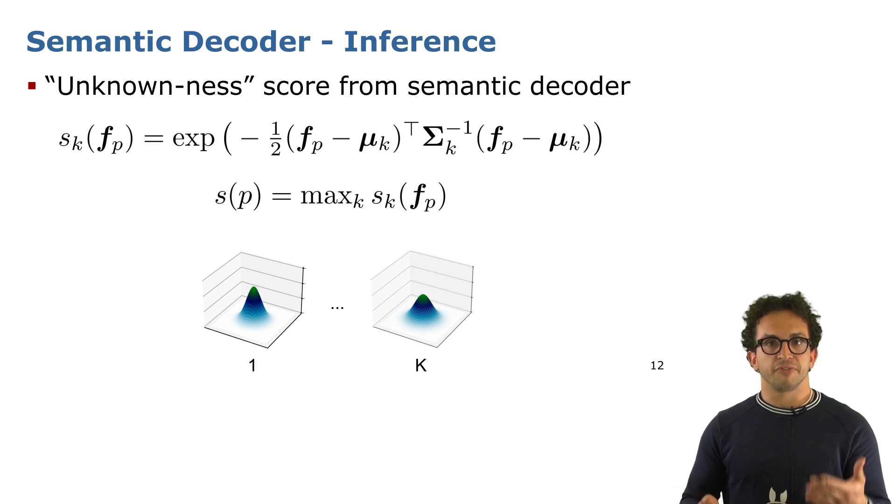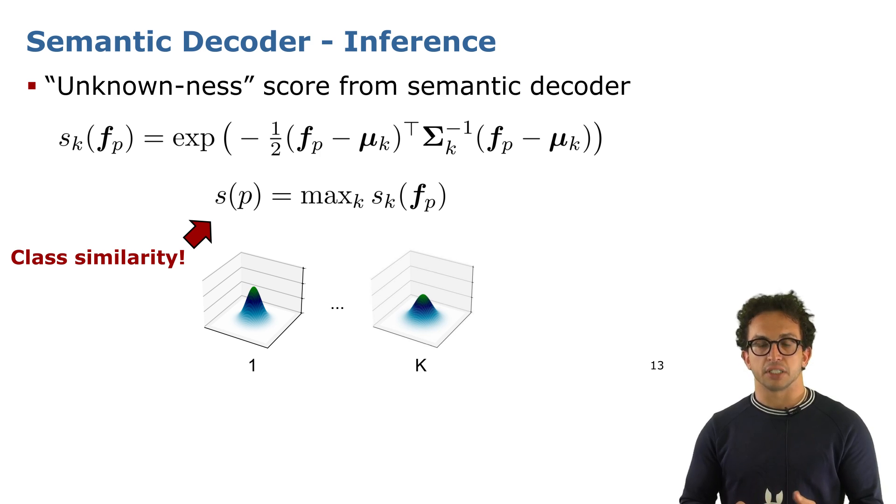This best fitting score is a measure of class similarity, so it tells us information on which is the most similar known class to the pixel that we're looking at.